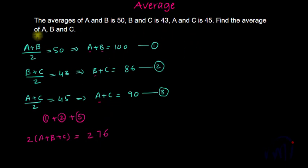And what we have to find, we have to find the average of A, B and C. That means we have to find A plus B plus C by 3. So from here A plus B plus C will be equal to 276 divided by 2.